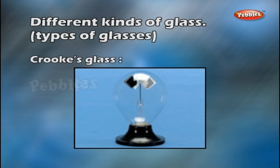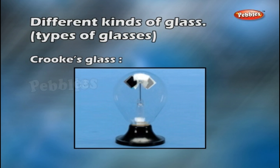Crookes glass. It is a special variety of optical glass for lenses, etc. It has a high refractive index and in its preparation, whole or part of calcium oxide is replaced by the oxides of lead, barium, zinc, calcium or magnesium.